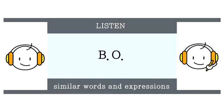Similar words and expressions. Two different expressions that we have for B-O are 'stank,' which is typically the past tense of stink but is also used informally to describe an unpleasant smell. And we've also got 'the stench of decay,' which refers to the smell of a dead animal or human undergoing the process of decay.